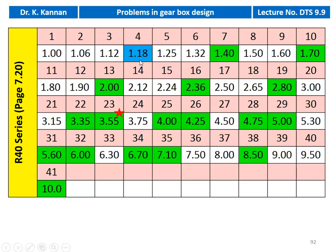We take the speeds starting from 35 RPM. Since 35 is not available, we use 35.5, which corresponds to the value 3.55 in the table (read as 35.5). From this starting point, we take every fourth speed from the R40 series.